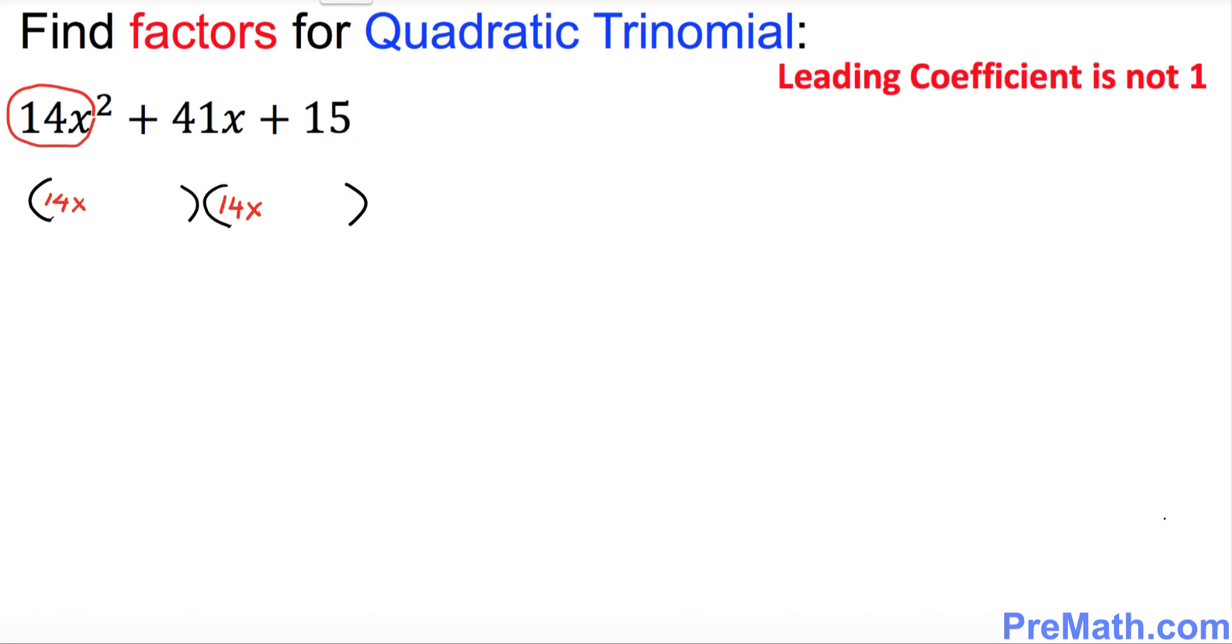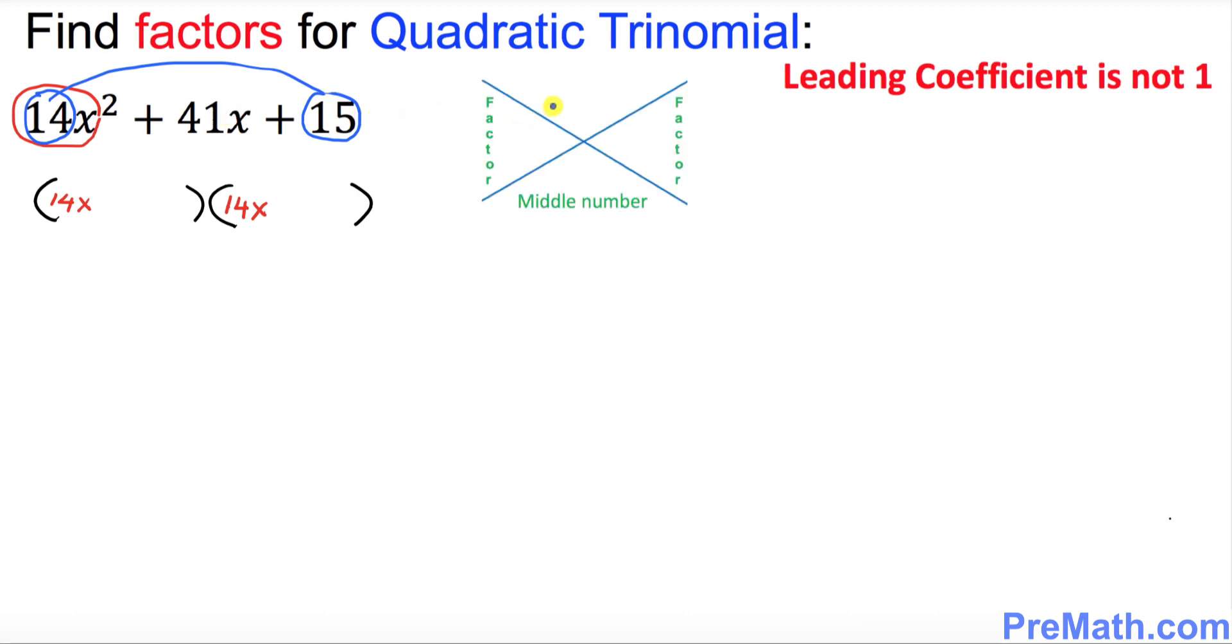Now I want you to look at this 14, the number at the left hand side, this end number, and positive 15 on this end. I want you to multiply these two numbers. 14 times 15 is obviously equal to 210. So I want you to put down 210 over here on the top in this diagram.